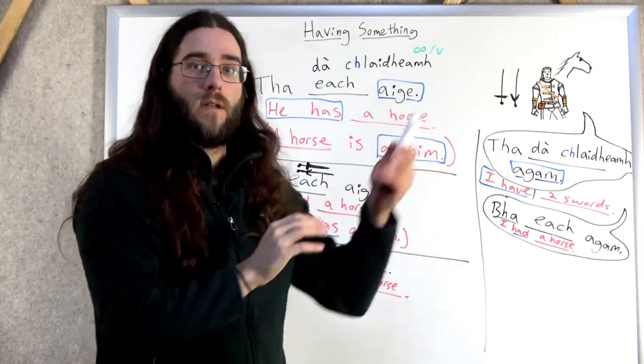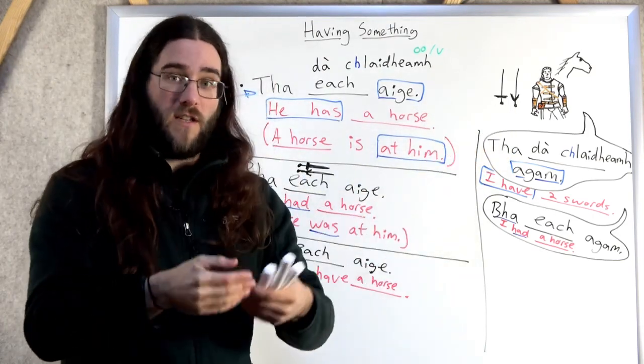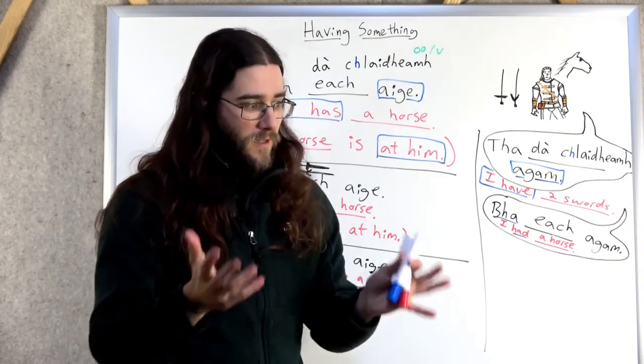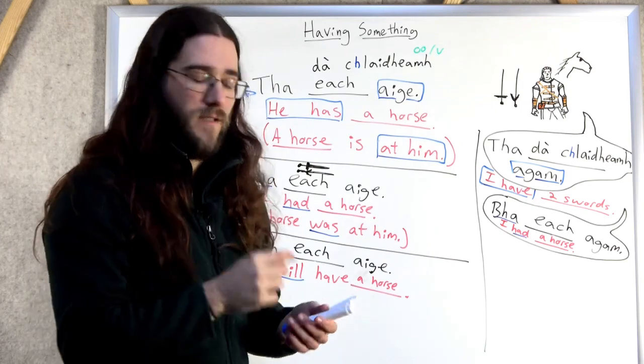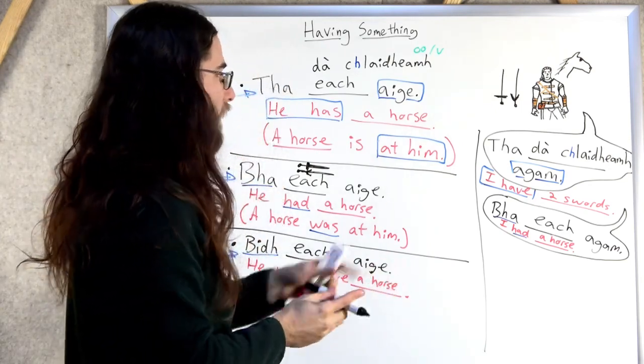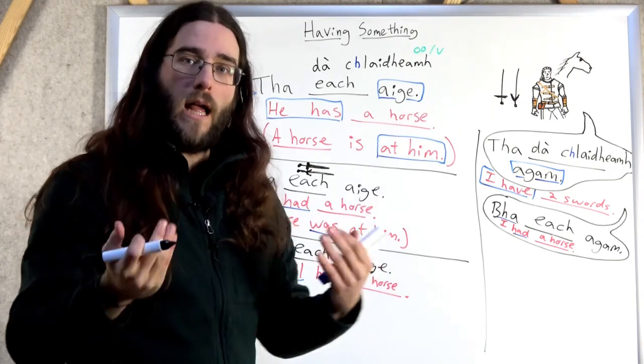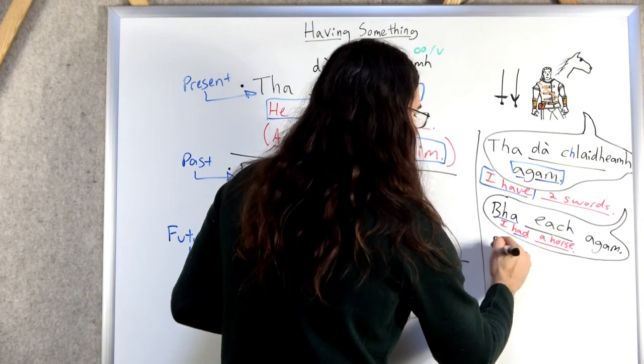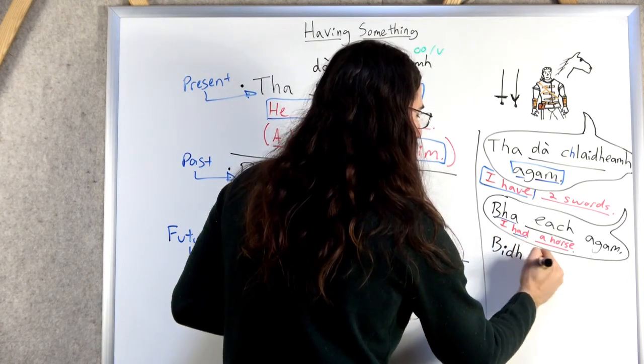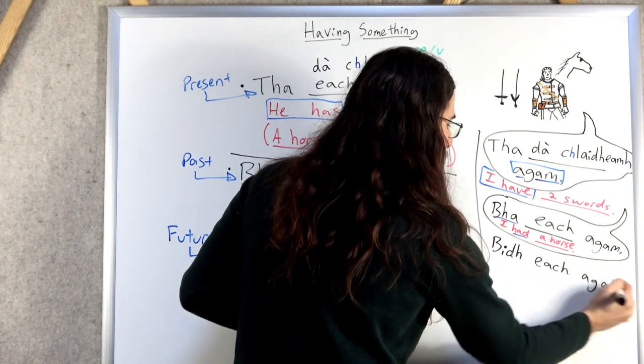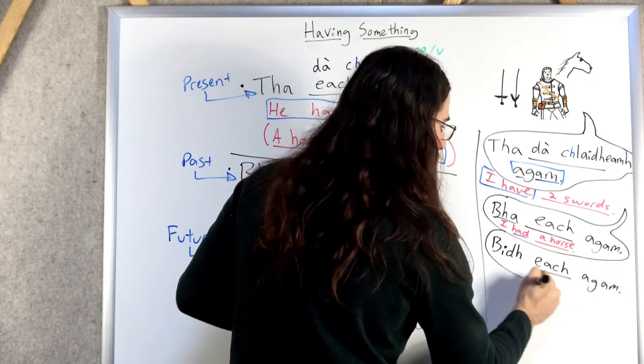Dachlayu. Ikka. Once he finishes his witcher training, goes to the trial of the grasses, becomes a full witcher, then he gets his double swords. Yeah. Okay. What about from his perspective? I will have. I will have. Bi. Ech. Akam. I will have a horse.